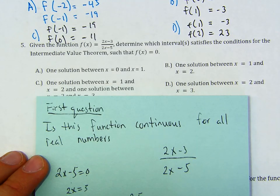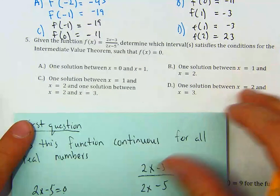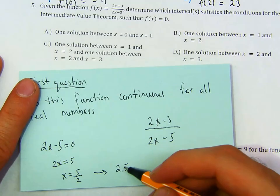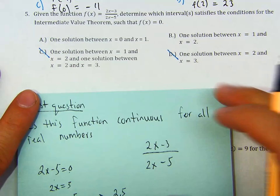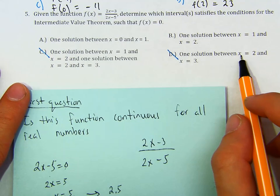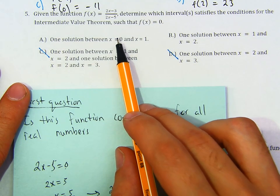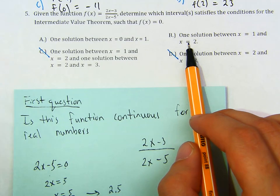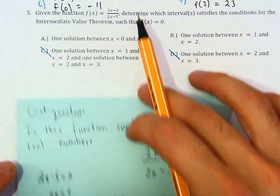So let's see which answer choices can be eliminated. Notice that you can't use x equals 2.5, so there's no guaranteed solution on any interval containing 2.5 — the function is not continuous between 2 and 3. But the function is continuous between 0 and 1, and between 1 and 2.